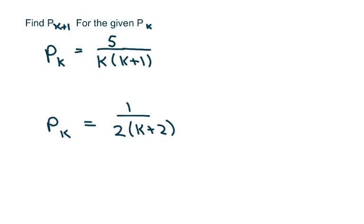Hi, everyone. We're going to find p sub k plus 1 for every given p sub k. And basically what we're doing is everywhere there's a k, you're just going to put k plus 1.